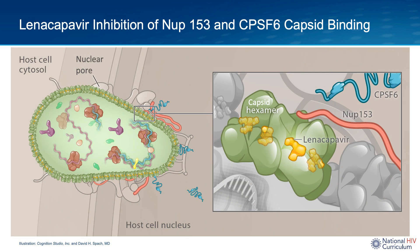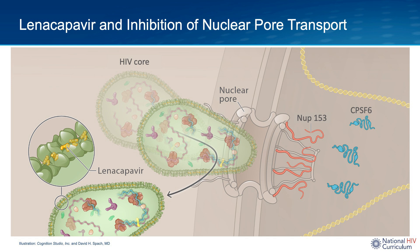As shown here, linacapavir binds to the same region in the HIV capsid where the host proteins NUP153 and CPSF6 bind. Thus, linacapavir competes with and blocks the NUP153 and the CPSF6 proteins from binding to the capsid shell. When linacapavir is bound to the HIV capsid proteins, the host proteins are not able to help guide the HIV core through the nuclear pore, which has the effect of blocking or at least slowing down the HIV core passage into the host cell nucleus. Also, since linacapavir makes the overall capsid shell very stiff, the HIV core loses some of the flexibility needed to squeeze through the very tight nuclear pore.